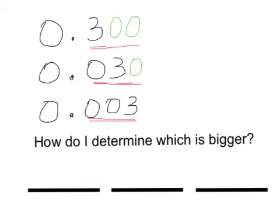So that means that the biggest decimal is three hundred, which is also three tenths, thirty hundredths, or three hundred thousandths.